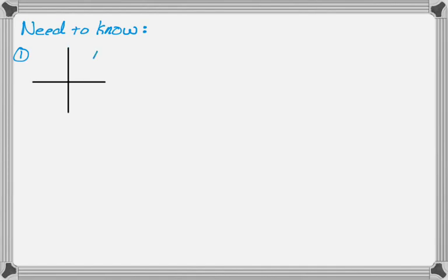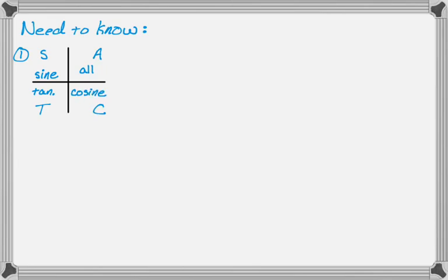There's a way that most people remember that — they draw a picture and put letters on it. The A stands for all, so all the trig functions are positive in quadrant one. The S is for sine, and therefore cosecant, which are positive in the second quadrant. The T is for tangent and therefore cotangent. So it's just telling you where the various trig functions are positive — all, then sine, then tangent, then cosine.